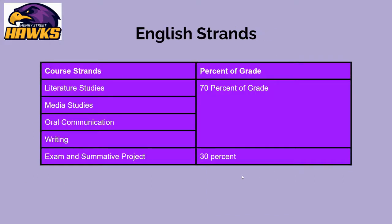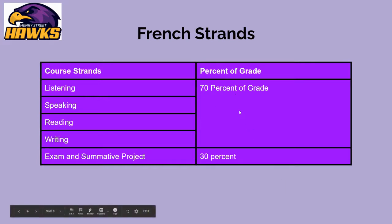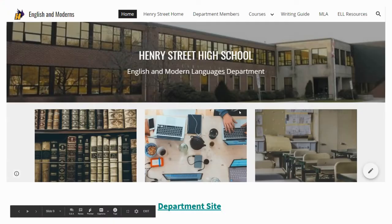The strands within both the English and the French subjects: in each case, we have the exam or summative project worth 30%. Within English, the course strands are literature studies, media studies, oral communication, and writing — these are worth 70% of the grade. Within French, the core strands are listening, speaking, reading, and writing, worth 70% of the grade, with 30% for the exam or summative project.